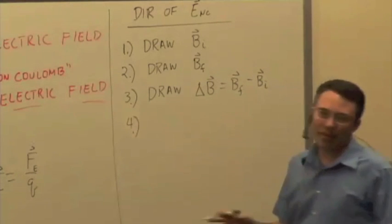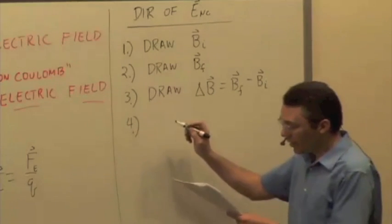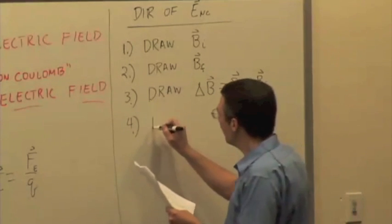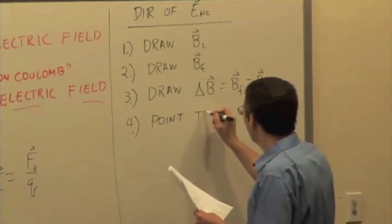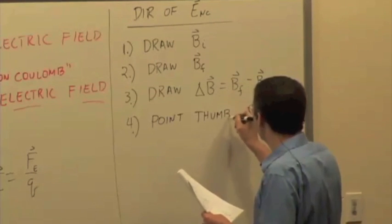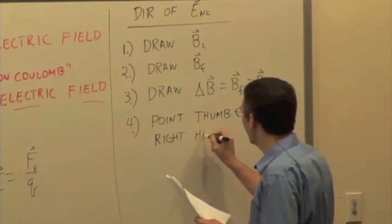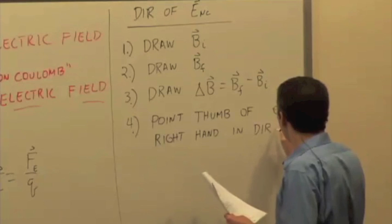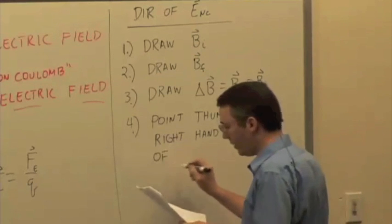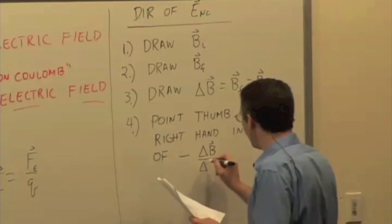And then there's yet another right hand rule. Sorry, but we just can't avoid it. And the way it works is this. Point your thumb of right hand in the direction of negative delta B over delta T.